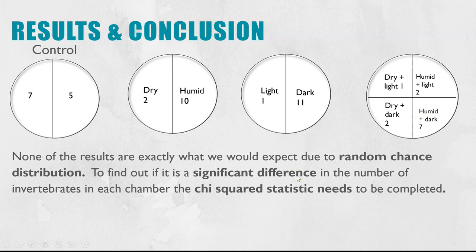This is what I actually found when I did this experiment: seven versus five, two versus ten, one to eleven, and then we've got one in the dry and light, two in humid and light, two in dry and dark, seven in the humid and dark. None of these match exactly what we might expect, particularly the control we don't have an exact 50-50 split, but as we said some of these slight variations from what we might expect are due to random chance distribution as well.